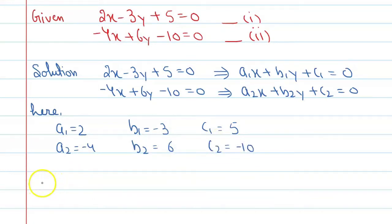Now we will find the ratios. First of all, a1 upon a2 is equal to 2 upon minus 4. Cancel it, you will get minus 1 by 2. Similarly, b1 upon b2, when you solve this, you will get minus 3 by 6, and this is again minus 1 by 2.